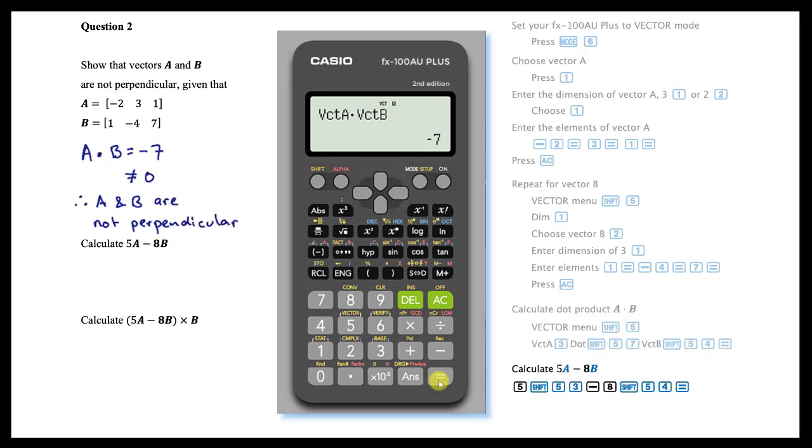To calculate 5A minus 8B, enter this expression, once again using the vector menu to enter vectors A and B.